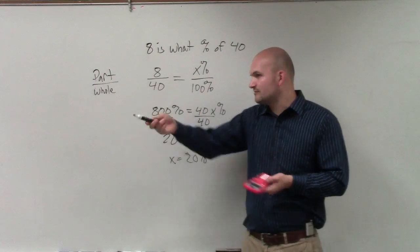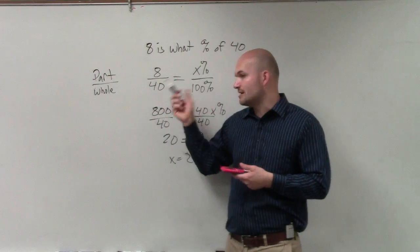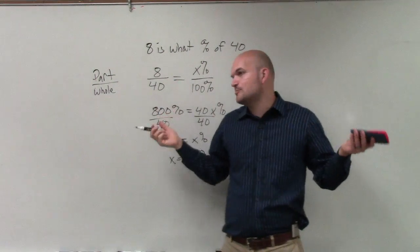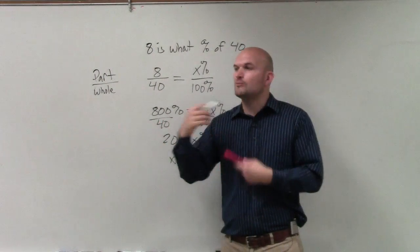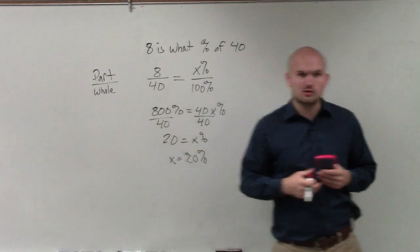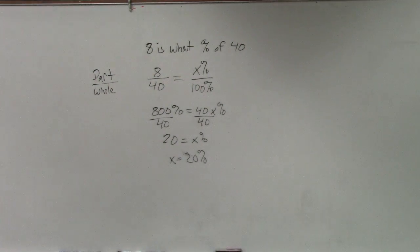But yes, once you understand that, there's definitely shortcuts. For instance, I wouldn't do this. I would just do 8 divided by 40 and see it's 0.2 and know it's 20%. But once you understand it, then you can start getting into the shortcuts. Or if anything else, you can always use that to check your answer to make sure.